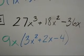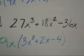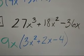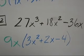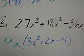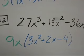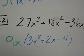9 times what gives me a negative 36x? Because remember, we treat the minus sign like it's a negative. Well, it would be 9 multiplied by negative 4 to get to negative 36, and the x is already on the 9, so I don't need any more x's.